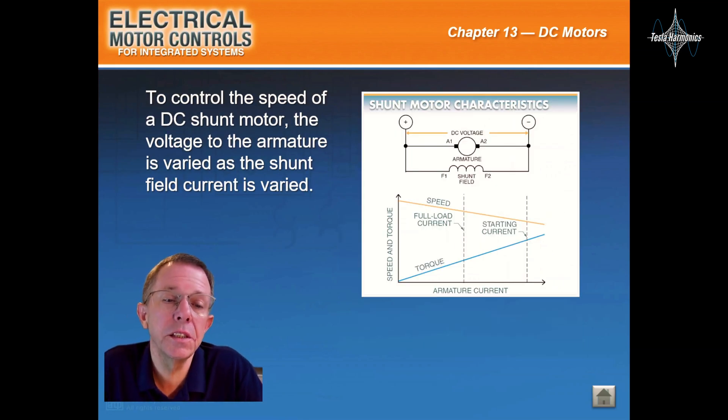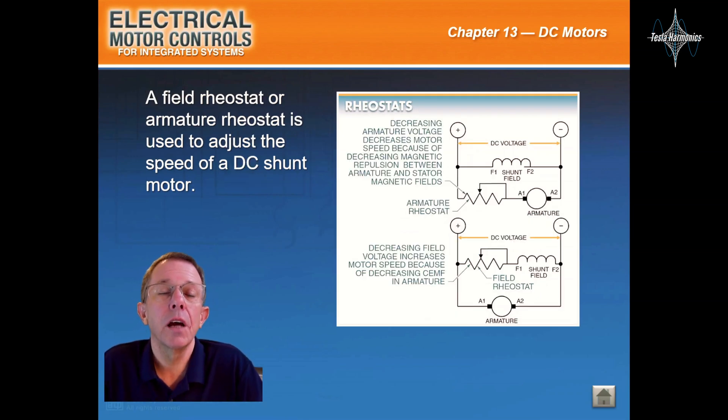To control the speed of a DC shunt motor, the voltage of the armature is varied as the shunt field current is varied. A field rheostat or armature rheostat is used to adjust the speed of a DC shunt motor.